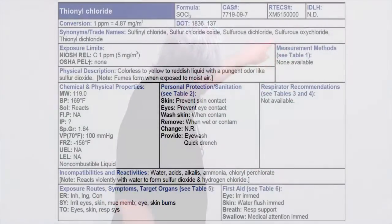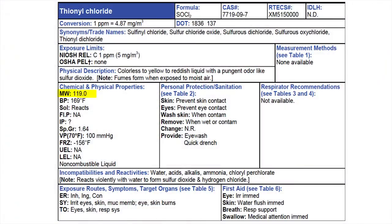Next I want to know where the vapors are going — up would be good news, down and hanging where people are is bad news. I look at the molecular weight in the physical properties box. Molecular weight is 119; air is 29. The vapors will go down.